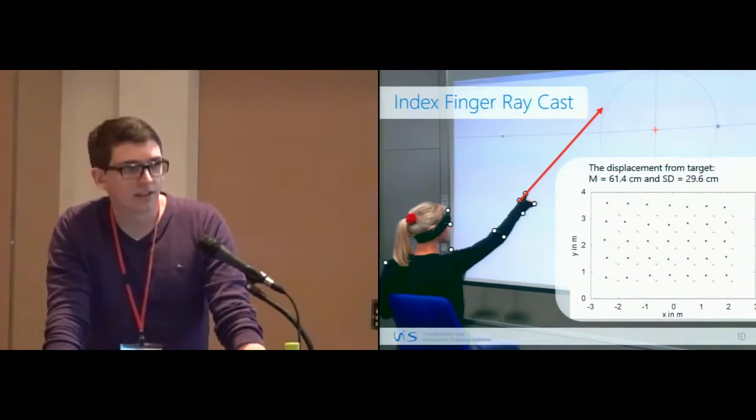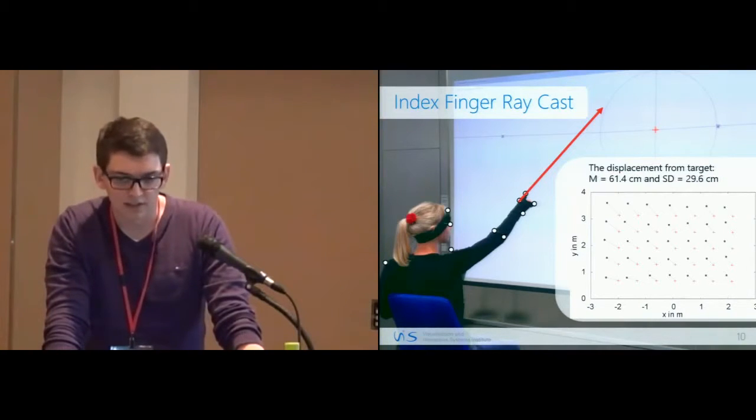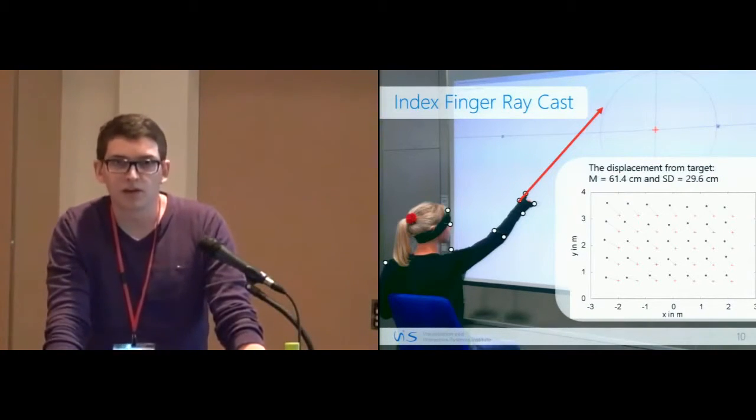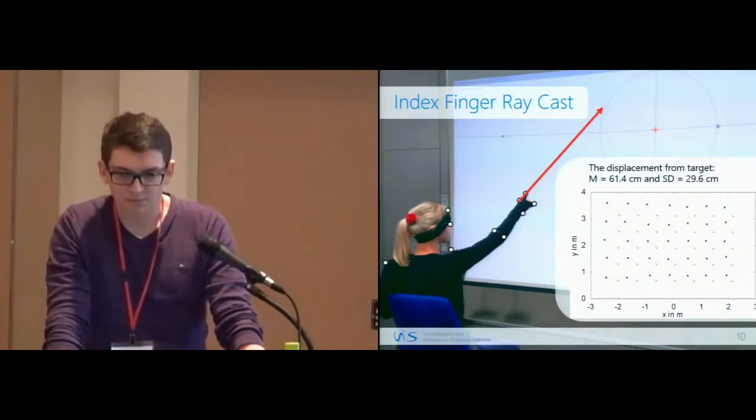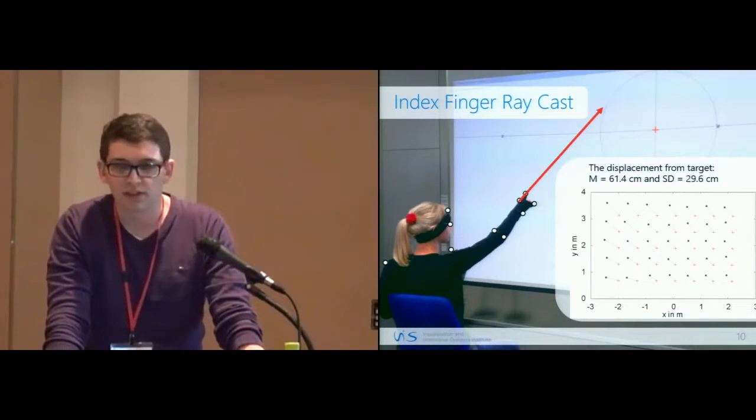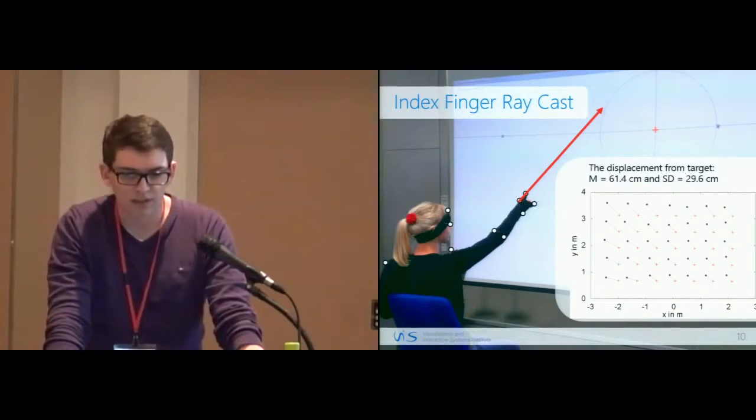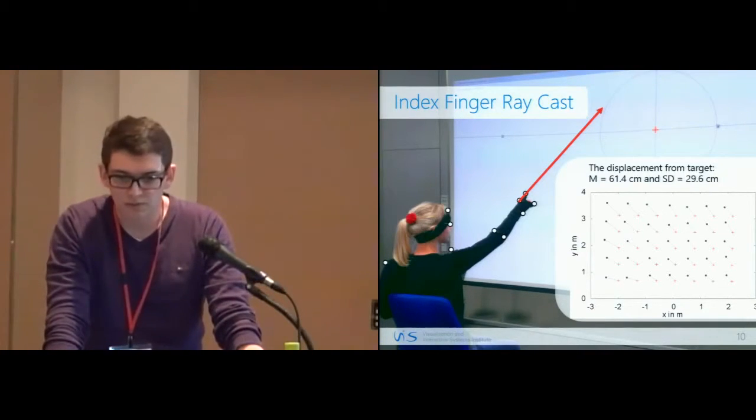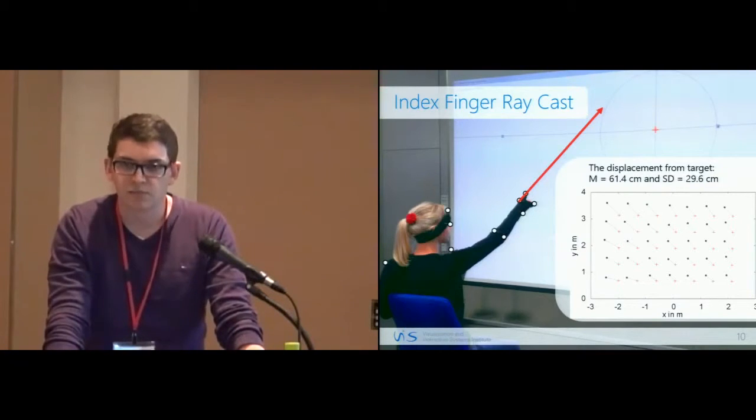As the third technique, we used index finger raycasting. We used two markers at the index finger. The displacement was 61 centimeters and the standard deviation was 29 centimeters. The standard deviation was the lowest in this technique. You can also see, like in the previous two techniques, the systematic displacement.